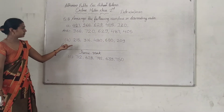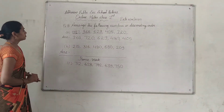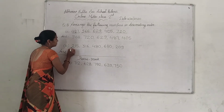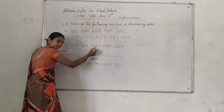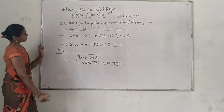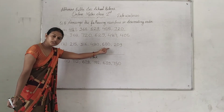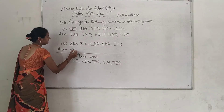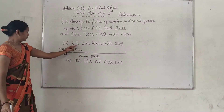Which number is the biggest in part B? We look at the hundreds position: 200, 300, 400, 600, and 200. The biggest number is 650. You will write 650 here first.